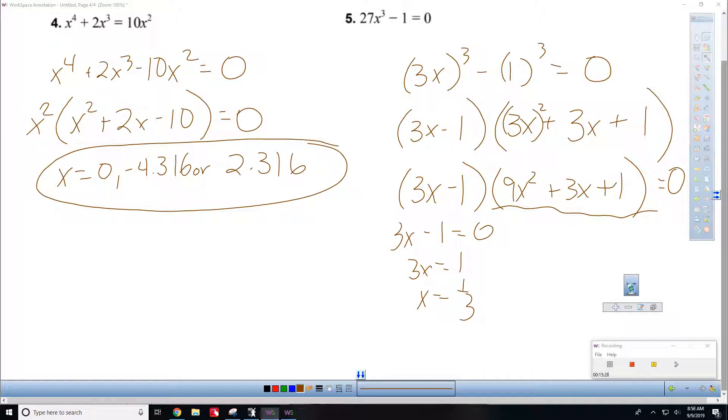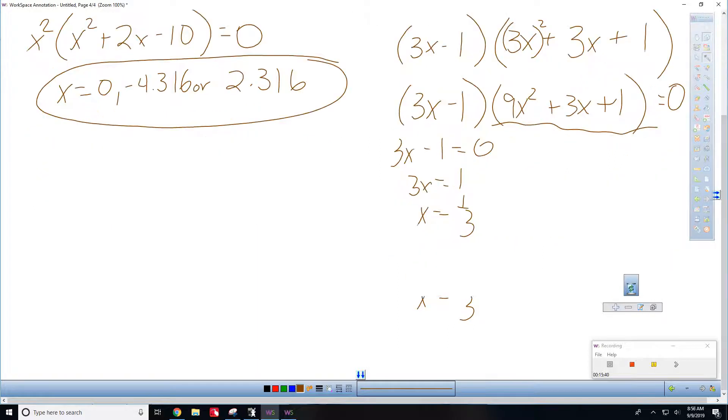Now, this one is going to definitely be minus 4ac. Definitely going to be imaginary. So, I got to use, for this, I got to use quadratic formula. A is 9. B is 3. C is 1. You get minus 3, plus or minus. Big square root of? B squared. 9. Minus 4 times 9 times 1, all over 18.